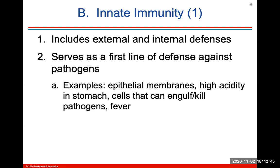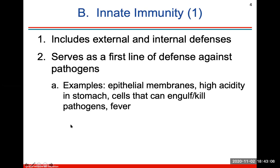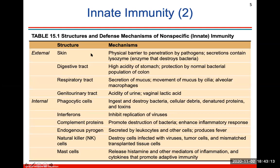Innate immunity serves as the body's first line of defense against pathogens. Examples include all of your membranes of epithelial tissue, whether that's skin or all of the membranes that line your internal or external linings of the organs. High acidity in the stomach is also innate immunity, as are cells that can engulf or kill pathogens, and fever. This is nonspecific or innate immunity, so I'd encourage you to read through these nonspecific mechanisms.